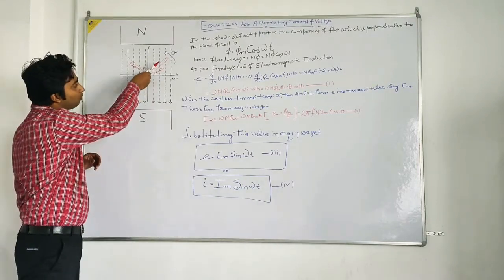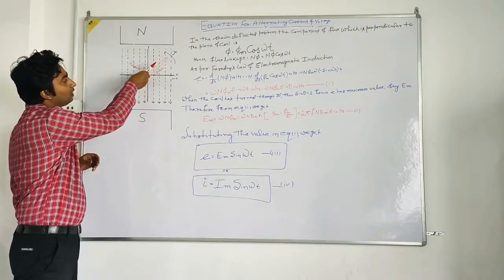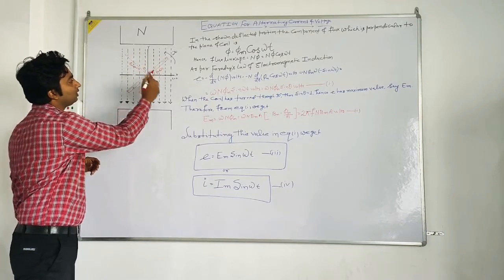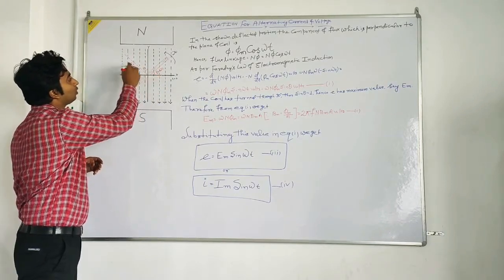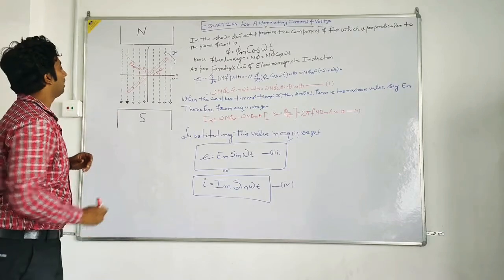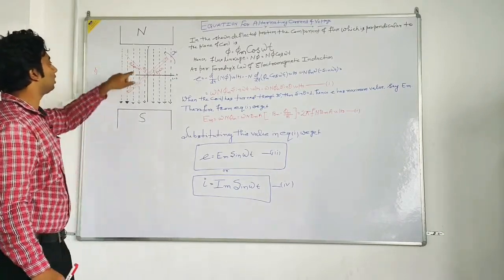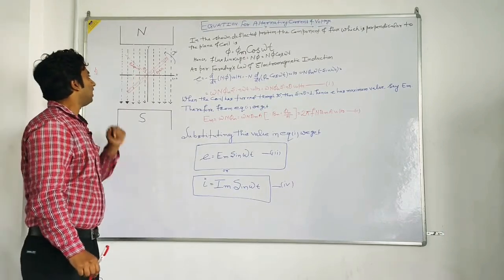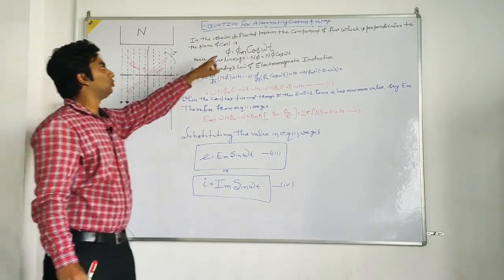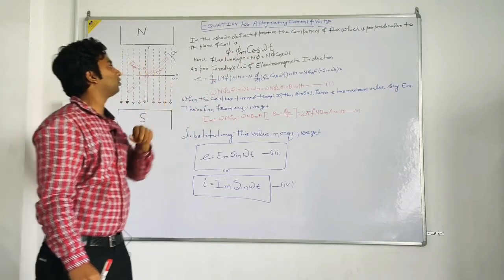As we know when we will resolve this vector we will get two components as this is the angle theta. So we will get phi m cos omega t and another component will be phi m sin omega t. So our useful component is phi equal to phi m cos omega t.